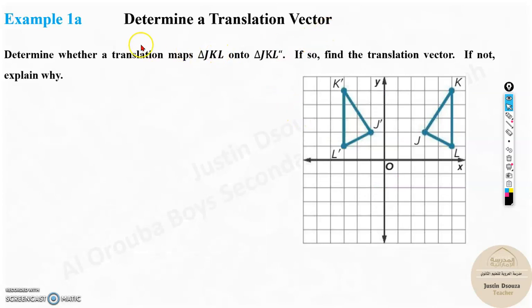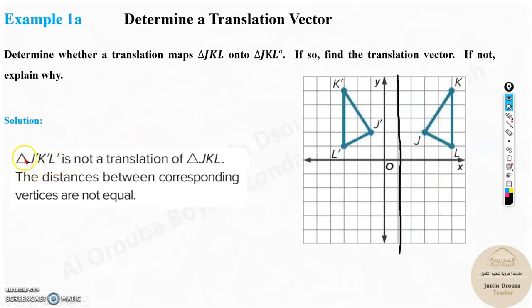Determine a translation vector. First, we should determine whether translation maps this JKL given over here onto JKL dash, the transformed one. If so, find the translation vector. If not, explain why. Look at this. Is there any translation? This is a reflection happening over here. It's not a translation. It's a reflection along x equals 1. J dash K dash L, that is the reflected image, is not translation. The distances between the corresponding vertices are not the same. If the distances were all same, then yes. If this point would have been like this, then it would be translation.